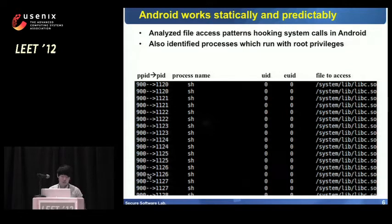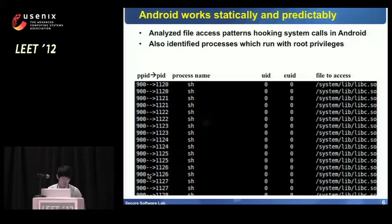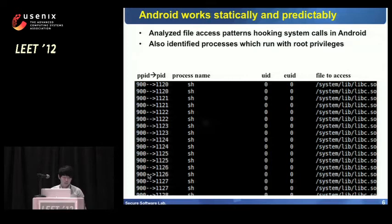We analyzed the root privilege usage pattern on the Android platform. Log is monitored by hooking system calls, recording PPID, PID, process name, UID, and file access information. The captured log shows that libc.so is continuously accessed to execute the shell process. When the privilege escalation attack code called Ginger Break is executed with RGB Droid running, after the escalation succeeds, the attacking code tries to open a shell — but shell execution fails, and it continuously retries. Ginger Break finally generates a rooting failure message because shell execution is blocked by RGB Droid.